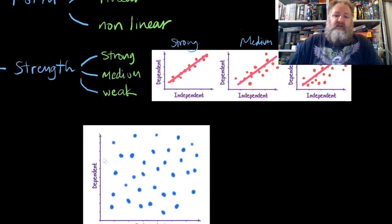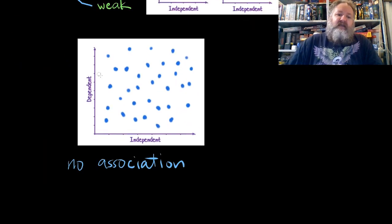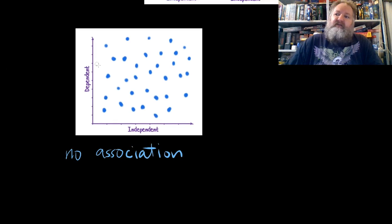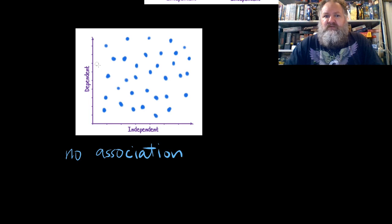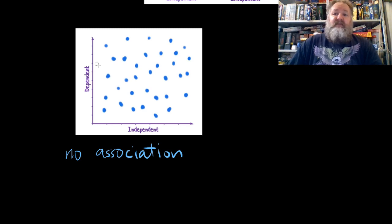Now there's one last one that I would like to talk about at the end of this, and that is a graph that would look a bit like that. Well, there's no real association between the two variables here, there's no pattern, there's no relationship. So what we would say is that there's no real association, that there's nothing really going on there at all.